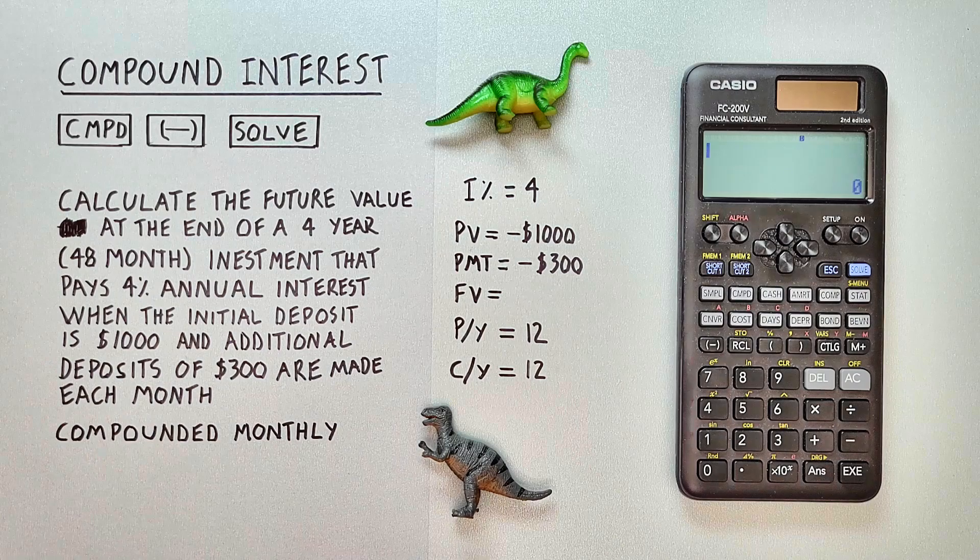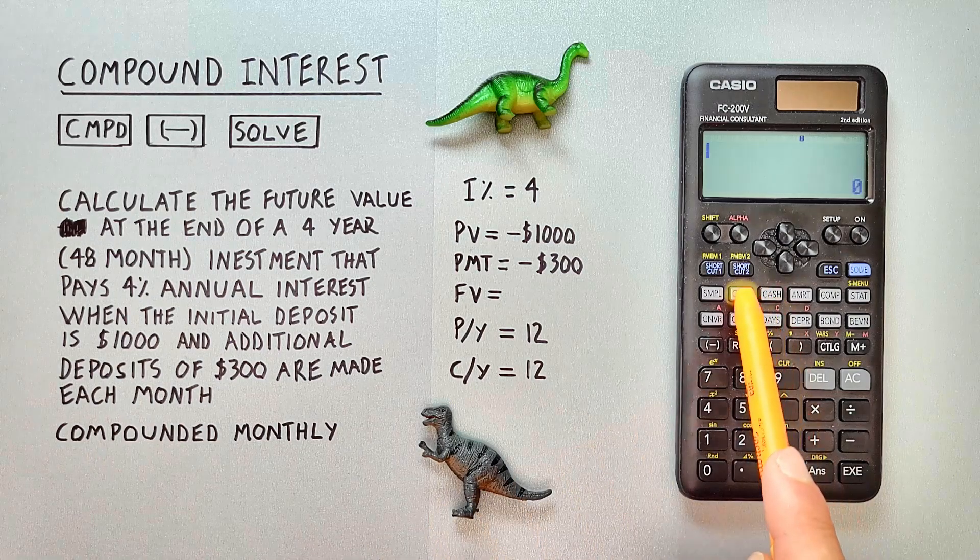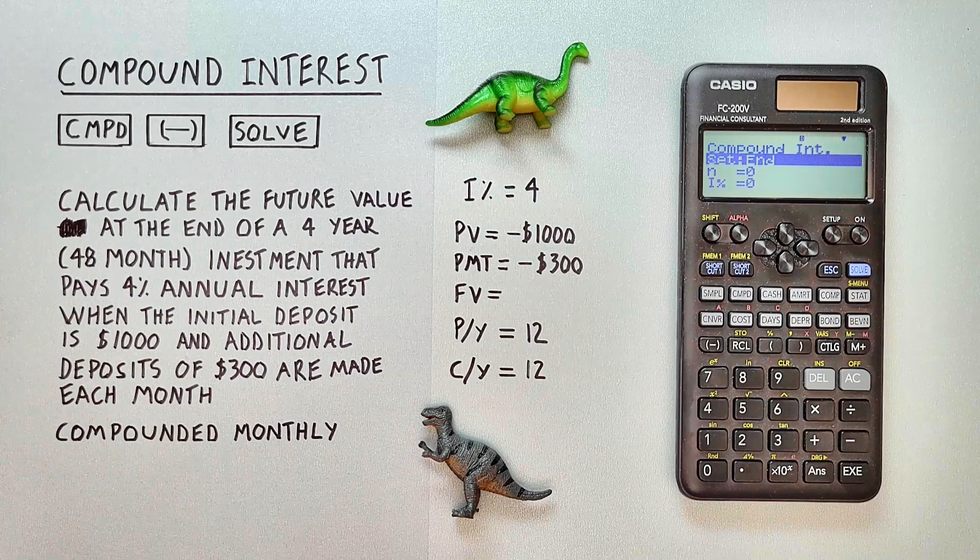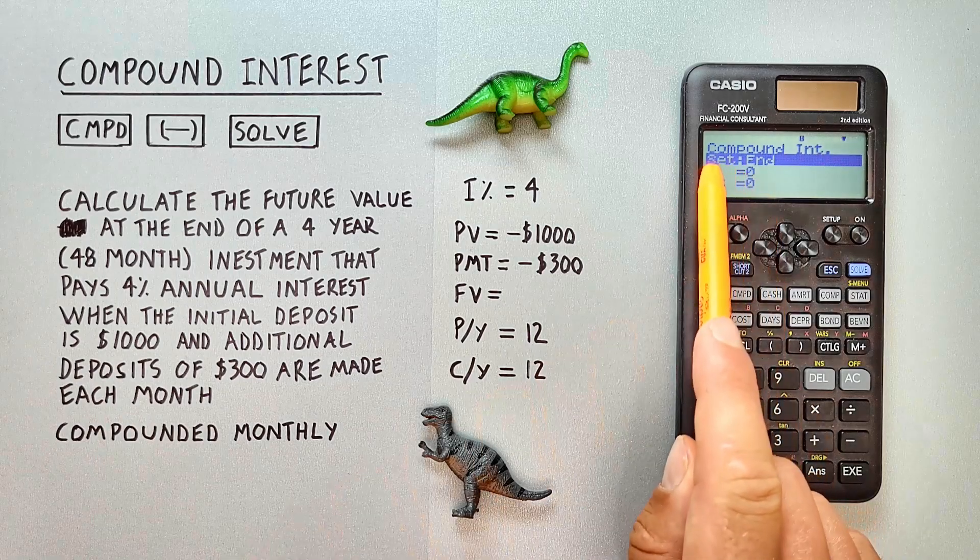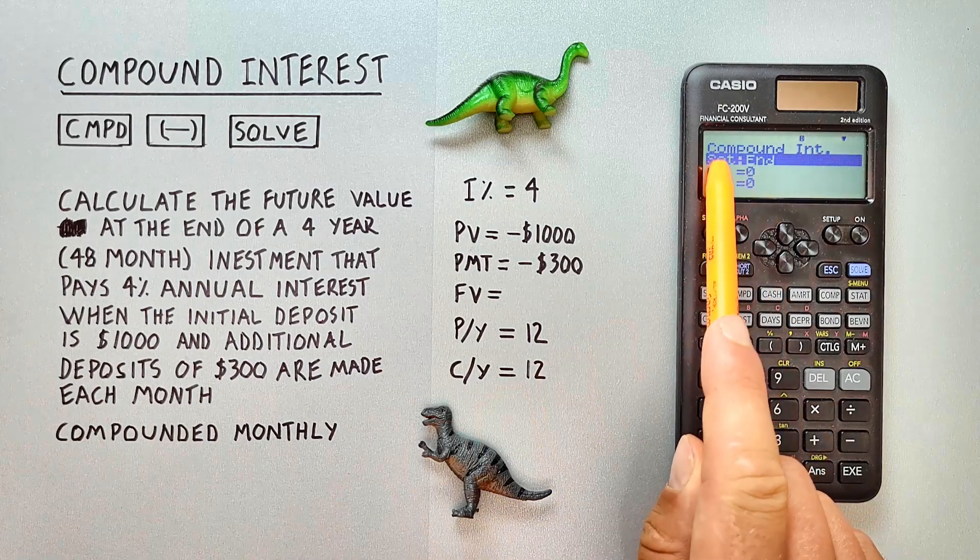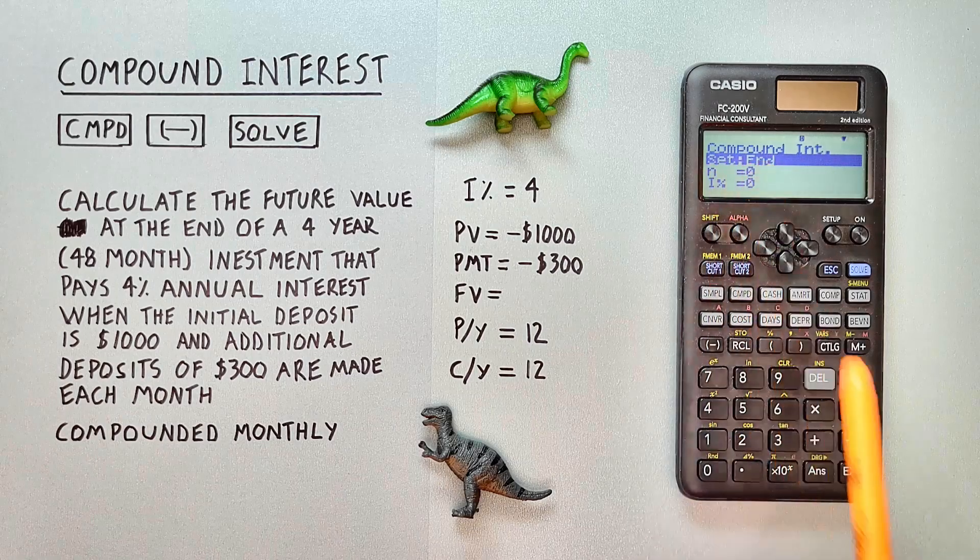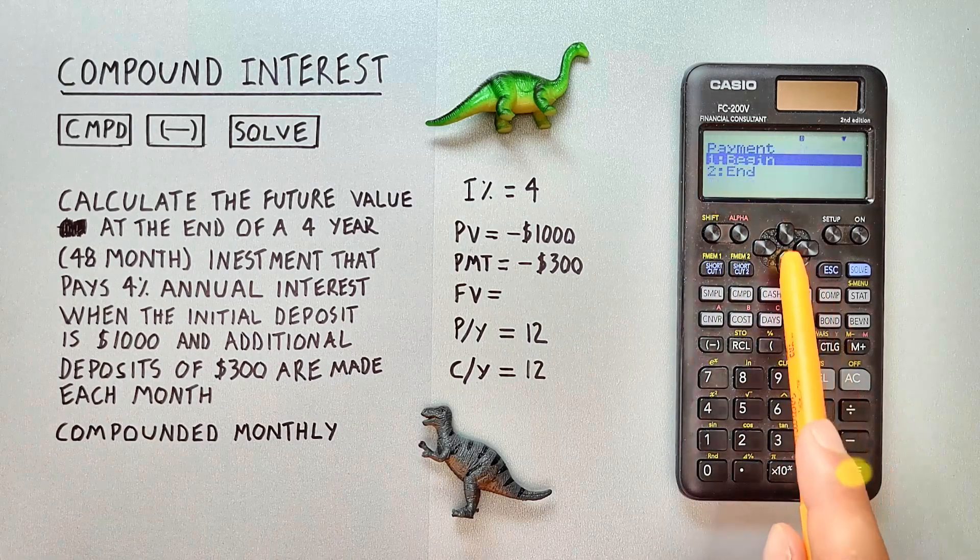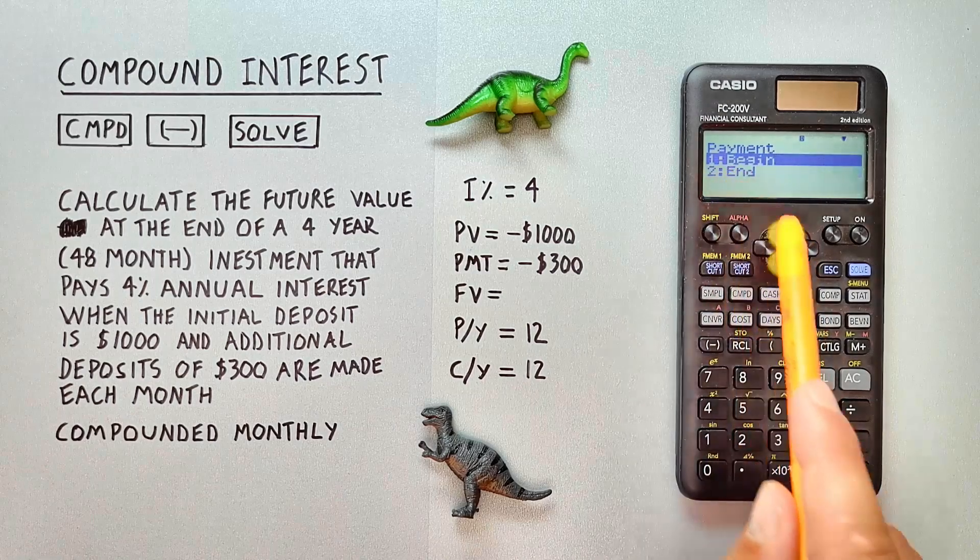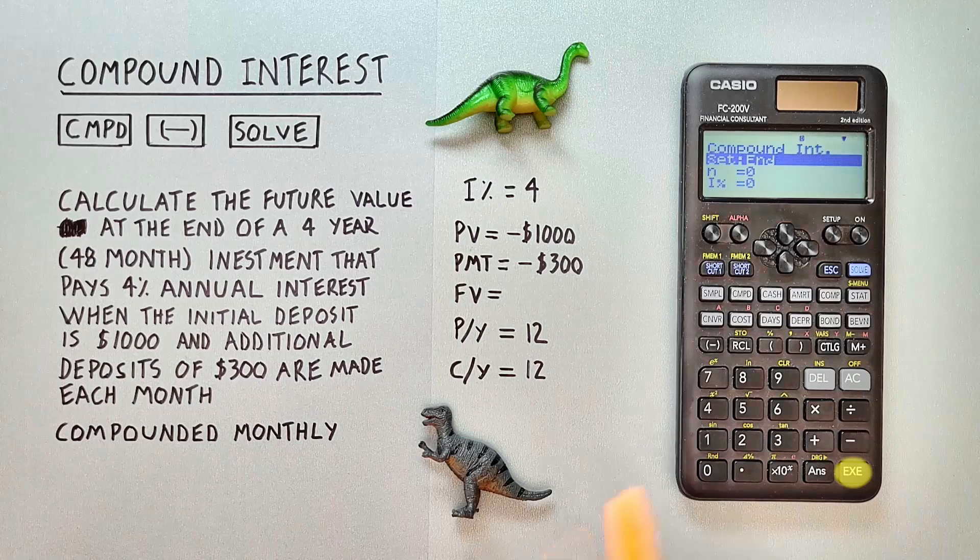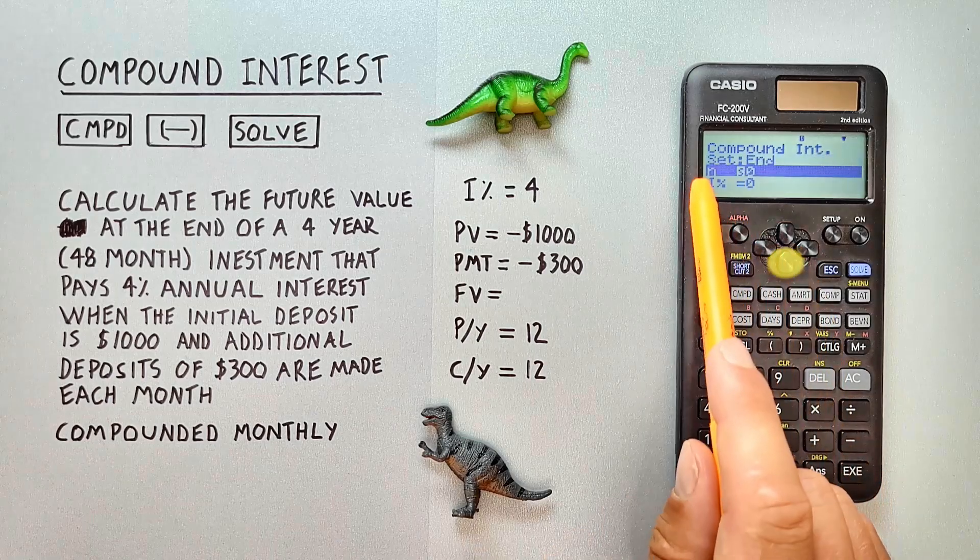To start entering this we press the compound key. That brings us to the compound interest menu here. First, we want to set our first option where it says set to end. If it's not already set to end, you can select it and then choose it from the menu here. So we want to choose end and then we scroll down to n.